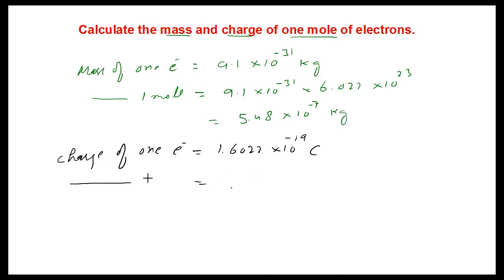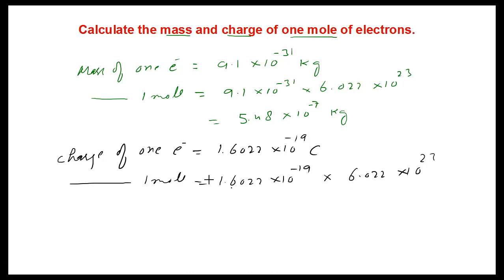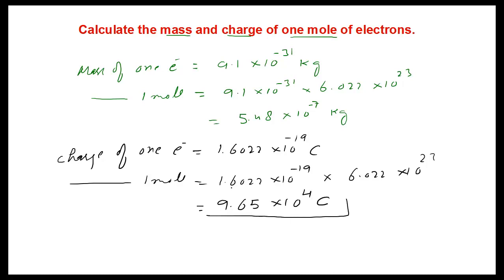the charge of one mole of electrons will be 1.6022 × 10⁻¹⁹ multiplied by Avogadro's number, 6.022 × 10²³. When we simplify, 6.022 × 1.6022 gives us 9.65, and 10⁻¹⁹ × 10²³ gives 10⁴, so the result is 9.65 × 10⁴ coulombs. This is the charge for one mole of electrons.